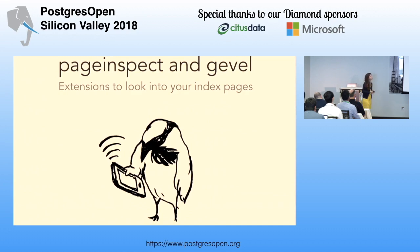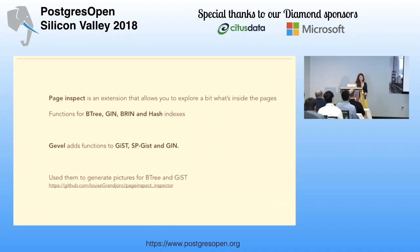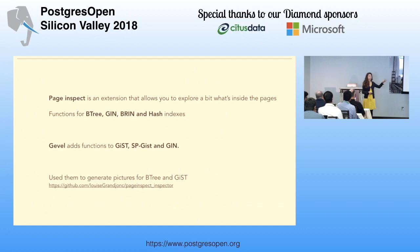Before going further, I want to mention two extensions you can use in PostgreSQL to explore what's going on inside your indexes. PageInspect provides functions for B-tree, GIN, BRIN, and Hash. Gevel is an extension for GIST, SPGIST, and GIN. I actually used these extensions to produce the pictures I'll show of indexes — they use real items and real page numbers so you can really imagine how it looks in your database.